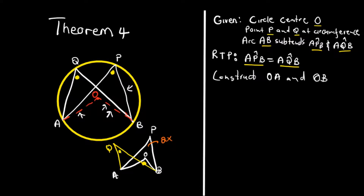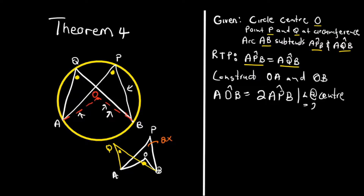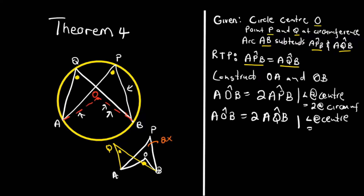So now we can say: angle AOB equals twice angle APB. The reason is that the angle at the center is equal to twice the angle at the circumference. Similarly, angle AOB equals twice angle AQB, for the same reason — the angle at the center equals twice the angle at the circumference.